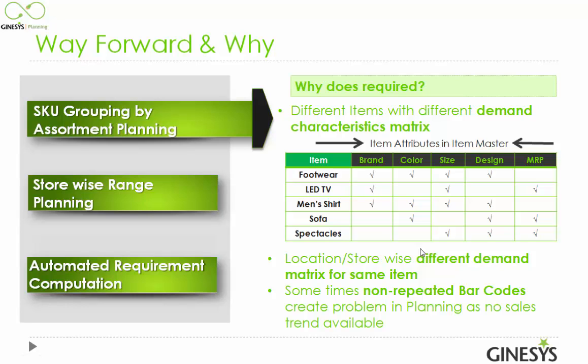Additionally, the same items can have different demand matrices in different store locations. For example, shirts in North India may require larger sizes, while in eastern or southern parts they may require L or M size — and in Punjab state it might be around XL or XXL size. So the same item can have a different demand matrix depending on the store or location.